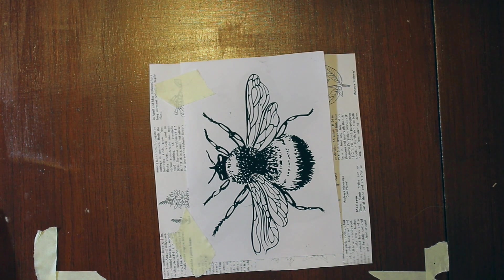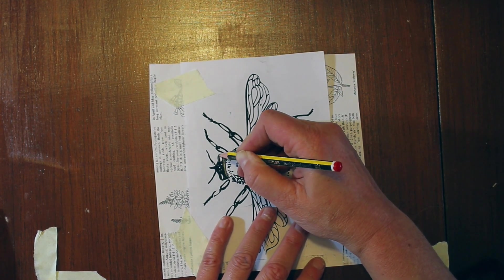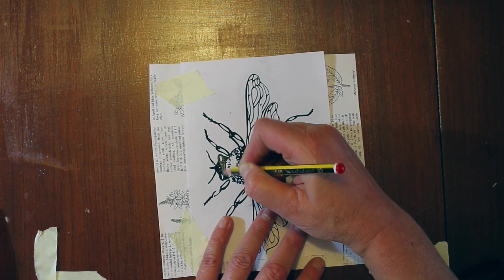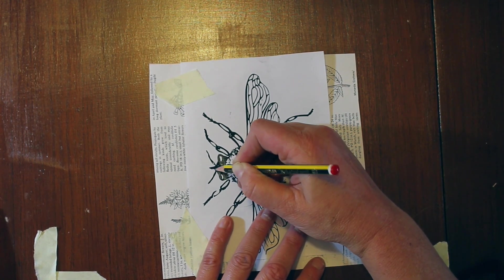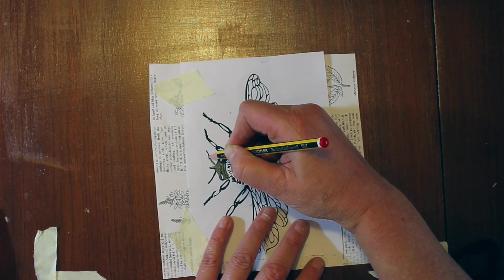I've secured it with two bits of masking tape at the top. This is so that I can occasionally lift up the paper to check my image underneath without the risk of it moving. Now I'm taking a normal pencil and I'm carefully tracing over that original image.